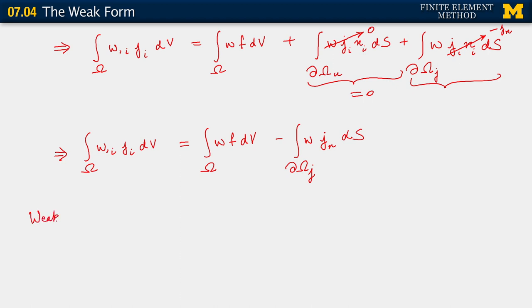Let me make a remark. What we've demonstrated is that the weak form is implied by the strong form — this is what we've just shown in the derivation. One can prove also that the other direction holds; it's not difficult — you can follow the steps we took in the 1D case. We're not going to show the right-hand implication; we demonstrated the left-hand implication. So this is our weak form, and this is what we're going to work from to develop the finite element method.